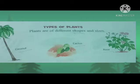Now, types of plants. Plants are of different shapes and sizes. Plants होते हैं, वो different size के होते हैं, different shapes के होते हैं. Some plants are big, some plants are small. You see the likes of coconut, cactus, rose, etc.